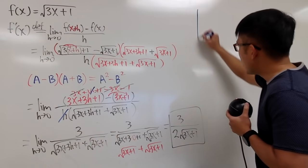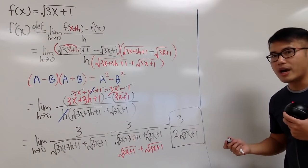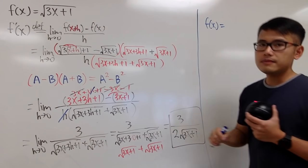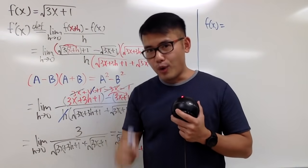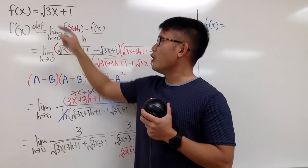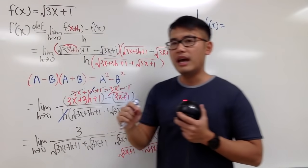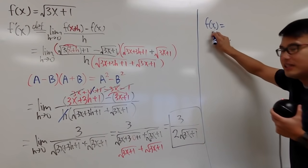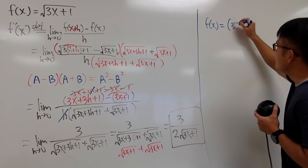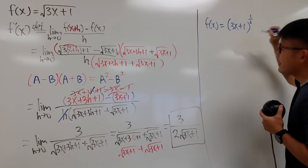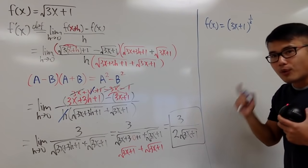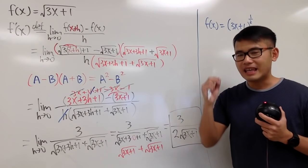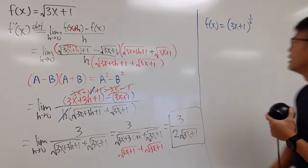This is the good definition of derivative. Now let's talk about how we can possibly do it in a shorter way. This is f(x) again. In calculus, you almost always look at the square root as a 1/2 power. So f(x) equals (3x plus 1) raised to the 1/2 power. Why? Because when you have the power form, you can use the power rule — everybody's favorite method.